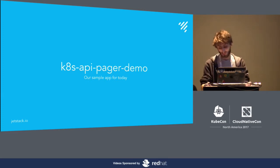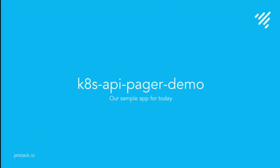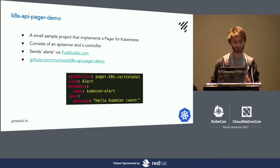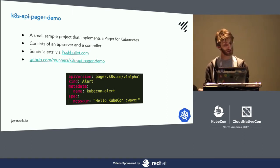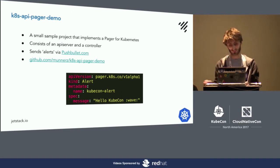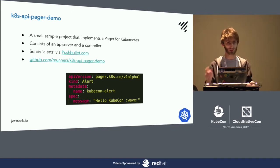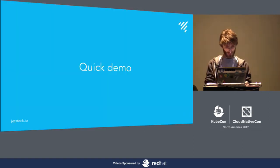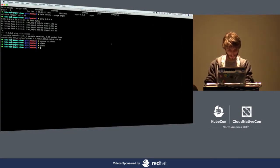I've put together an example application to demonstrate all of this: the API pager demo. I did this talk in London without the API server, which you'll see soon. It's all on GitHub under my namespace — the link is towards the end. It's a small, simple pager for Kubernetes. You create an alert resource in the API server and you get alerts from Pushbullet — a little paging application.